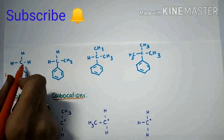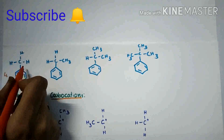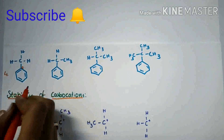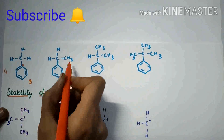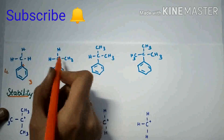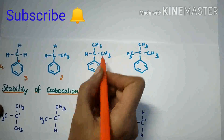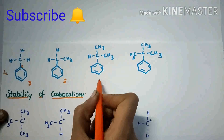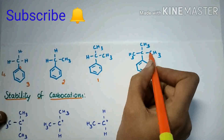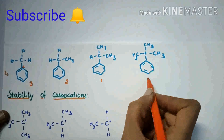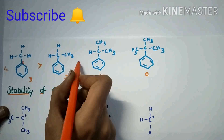In this question, this carbon is attached to the double bonded carbon, so these three are alpha hydrogens. Here, two alpha hydrogens. Here, only one alpha hydrogen. And here, there are no alpha hydrogens. So the stability order is as follows.